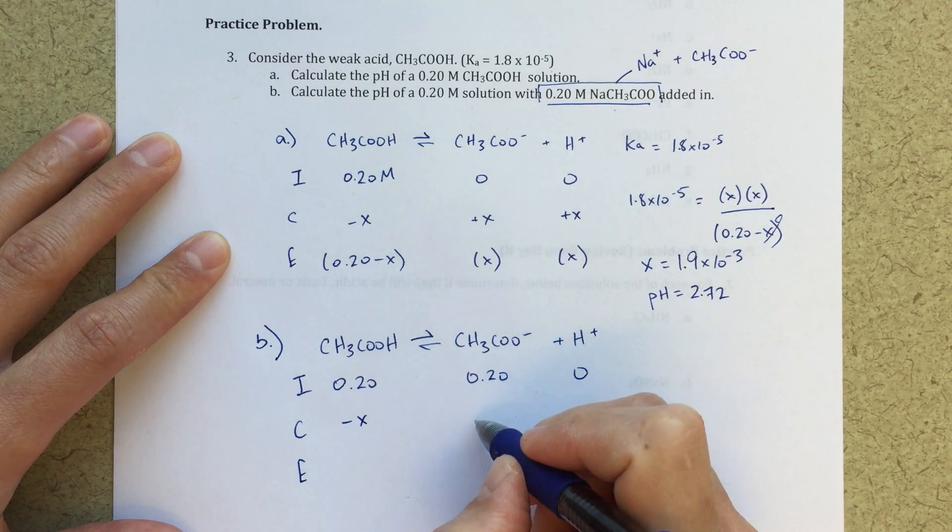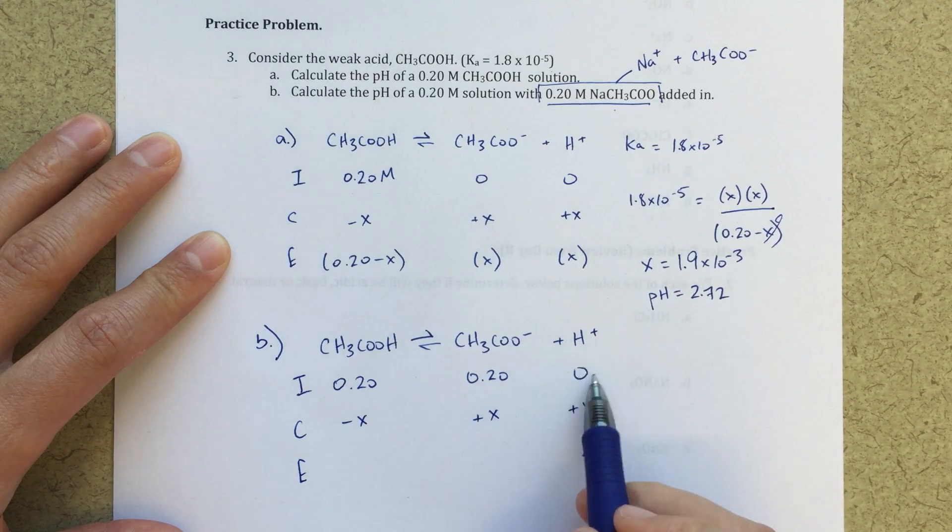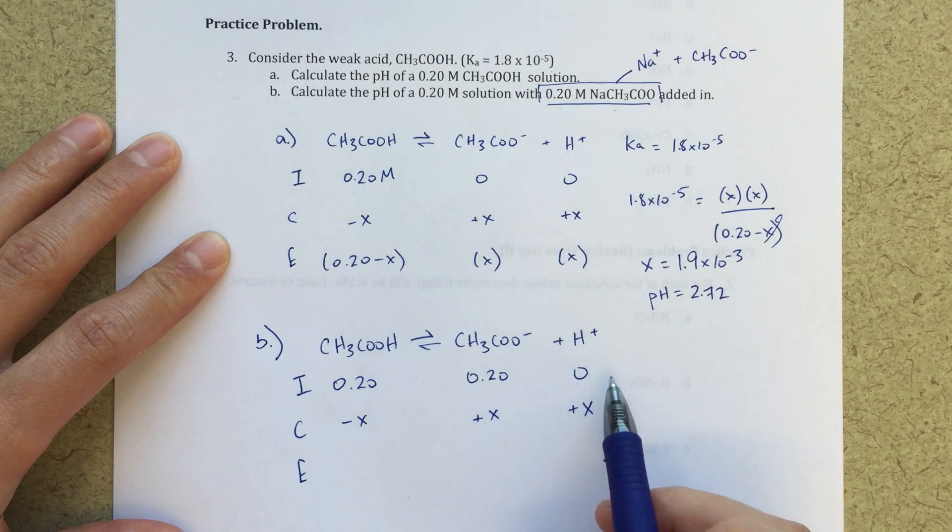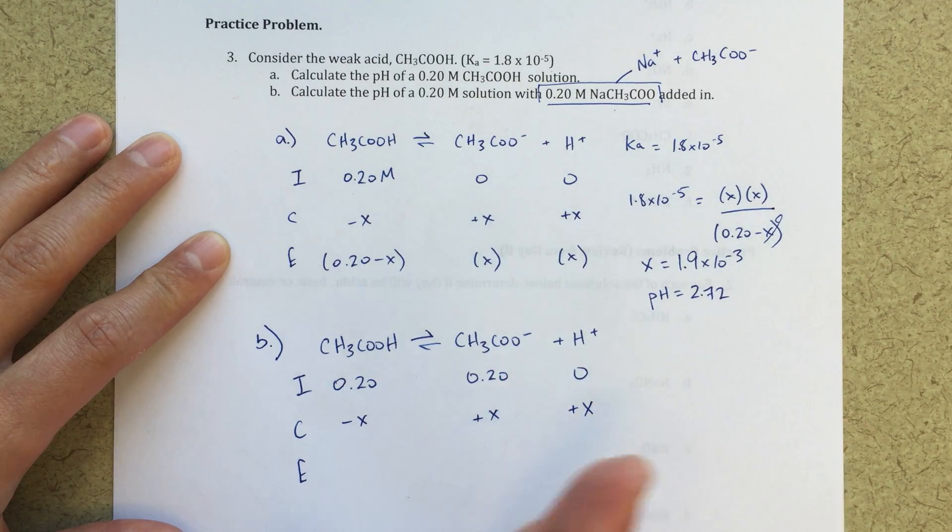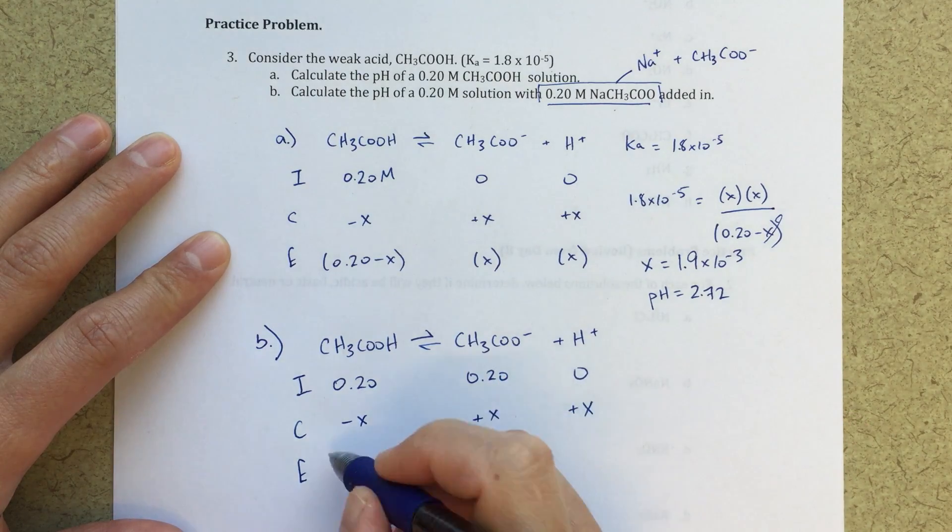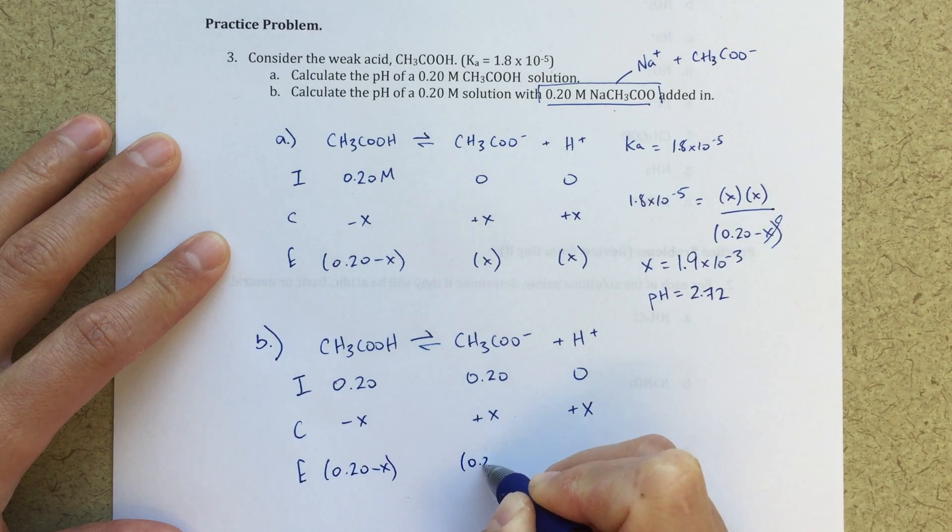Now, again, this is going to shift a little bit to the right, minus X, plus X, and plus X, because I've got 0 H+. Because essentially I've got 0 H+, even though I'm starting with some initial concentration here, this is still going to be shifting to the right in order to get to equilibrium.